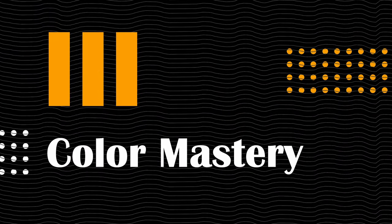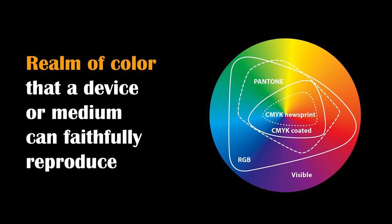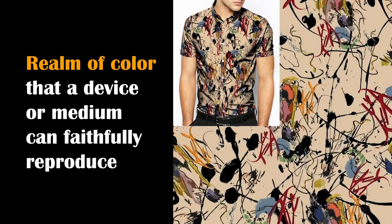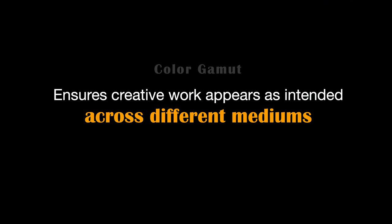Our next section is about color mastery. The first stop is color gamut — the realm of color that a device or medium can faithfully reproduce. It's the science behind how accurately colors are represented in various contexts, from digital displays to print. Understanding color gamut is essential for designers as it ensures that their creative work appears as intended across different mediums, offering a consistent and true-to-life visual experience.